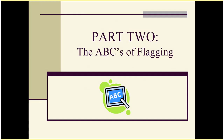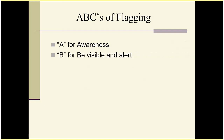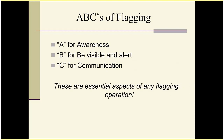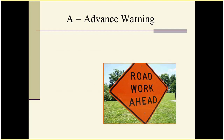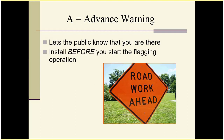Now we move on to Part 2: the ABCs of Flagging. A is for Awareness, B is for Be Visible and Alert, and C is for Communication — or Control. The advance warning area is where your temporary traffic control signs are located. These signs let the public know you are there and working, and they need to be in place before you start the flagging operation.